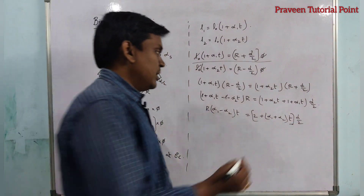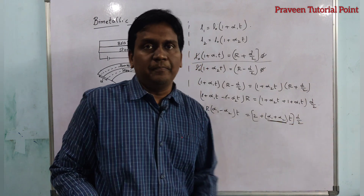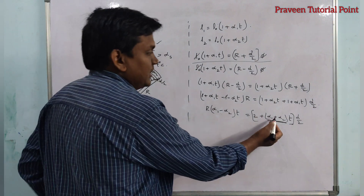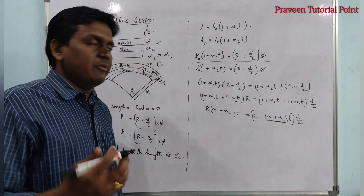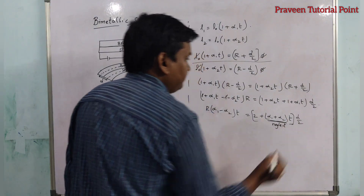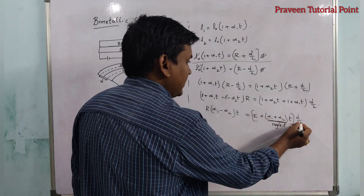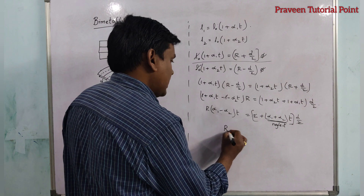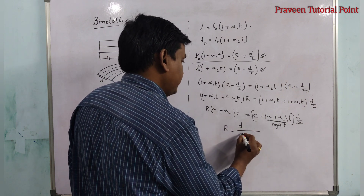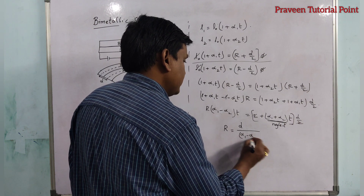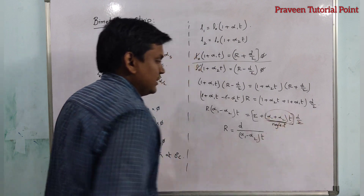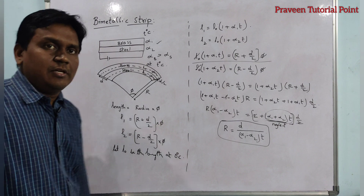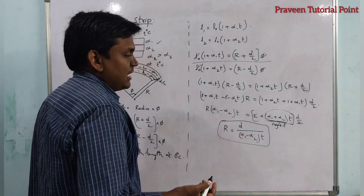Now, alpha1 plus alpha2 — since these alpha values are very small, on the order of 10 to the power minus 6, adding that term still gives a very small value, so we neglect it. After cancelling the 2s on both sides, we get: r equals d divided by (alpha1 minus alpha2) into t. So the radius of curvature of the bimetallic strip is r = d / [(alpha1 − alpha2) × t].